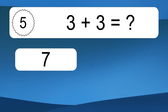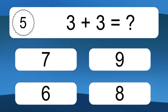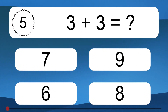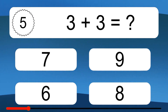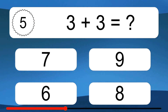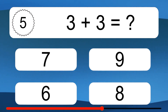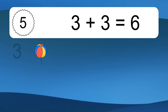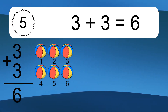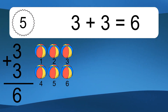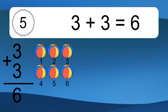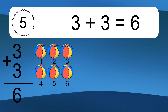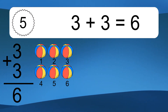3 plus 3 equals what? 3 plus 3 equals 6. Let's count it. 1, 2, 3, 4, 5, 6.